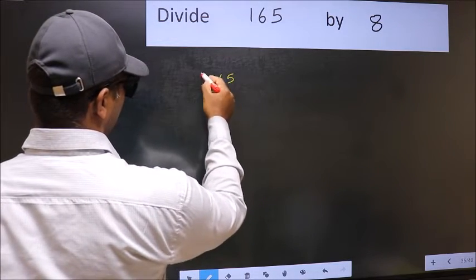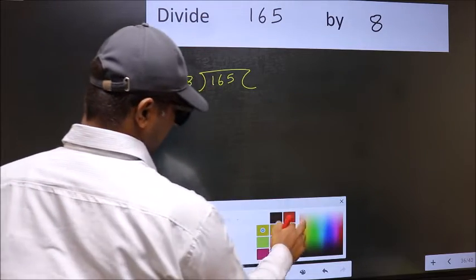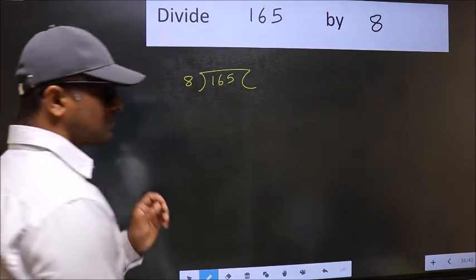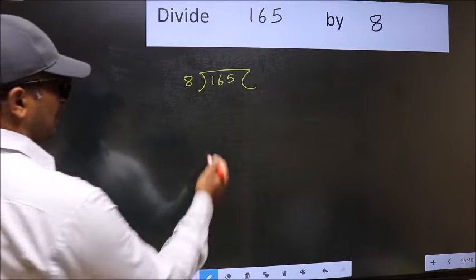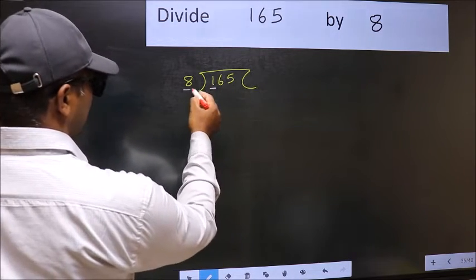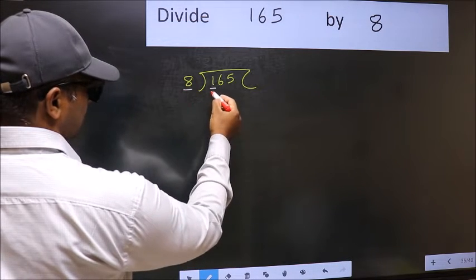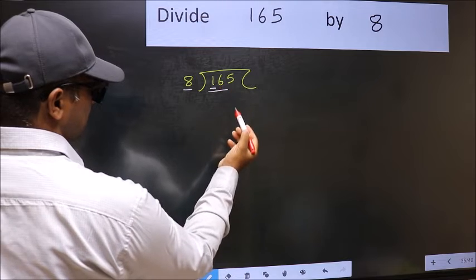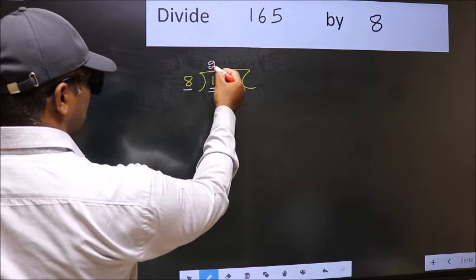165 and 8 here. This is your step 1. Next, here we have 1 and here 8. 1 is smaller than 8, so we should take 2 numbers: 16. When do we get 16 in 8 table? 8 times 2 is 16.